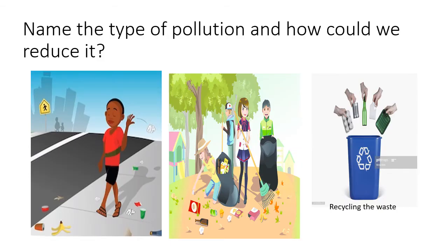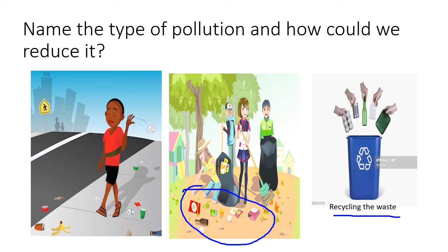Look at the given pictures. Name the type of pollution and how could we reduce it? We can see the garbage on the land. Yes, it is land pollution. We can reduce it by throwing in the dustbin or recycling bins, so we can recycle and can use it in the future.